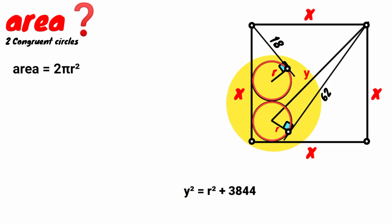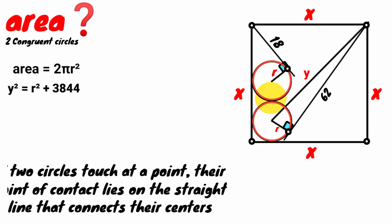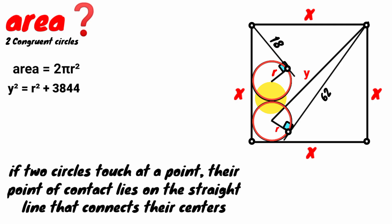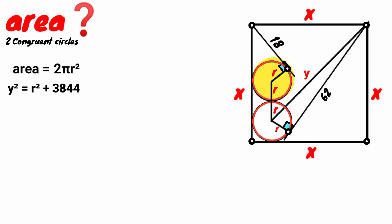Now look at these two circles — they both touch at this point. From circle theory, there is a rule that if two circles touch at a point, their point of contact lies on the straight line that connects their centers. Since this is the center of this circle and this is that of this circle, the point of contact lies on the straight line connecting them. It is obvious that this segment is a radius r and this is also a radius. Now draw a radius to this point of contact and here also draw another to this point of contact.